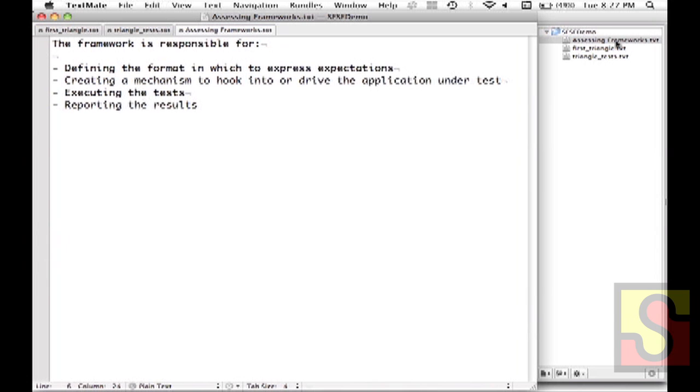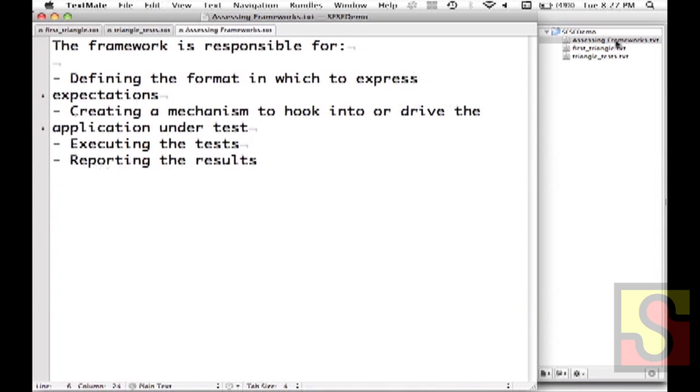I wrote what I believe a framework is responsible for. The first thing is defining the format in which to express expectations. If you're using FitNess that's going to be in a wiki. With Robot Framework you can express your expectations in plain text files either in natural language or in tables that are delimited like wiki markup language, or you can create them in HTML files.